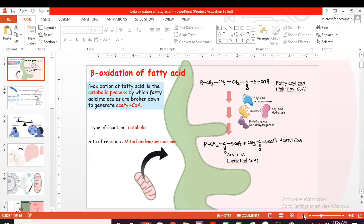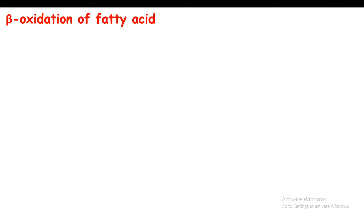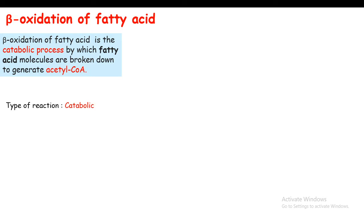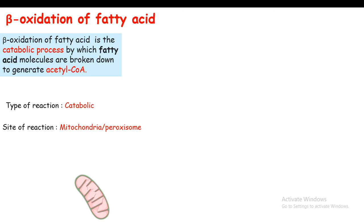In this video we're going to talk about beta oxidation of fatty acids. Beta oxidation of fatty acids is the catabolic process by which fatty acid molecules are broken down and generates acetyl CoA. It is a catabolic reaction — that means a breaking-down type of reaction — and the site of reaction is the mitochondria, and to some extent it also takes place in the peroxisome. There are some differences in mitochondrial versus peroxisomal beta oxidation.